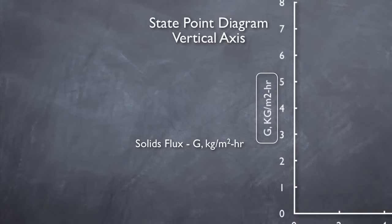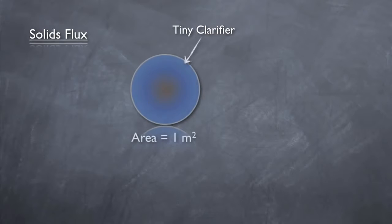In this case, the solids flux is the mass of solids passing through the clarifier in one hour normalized to one square meter of clarifier area. Now that was a mouthful, let's try and simplify it. Imagine a tiny clarifier with a surface area of only one square meter.